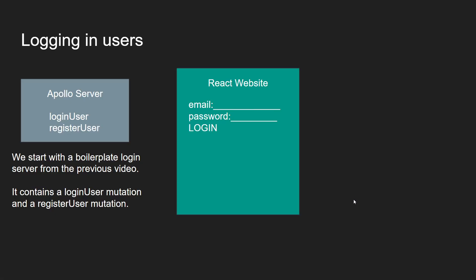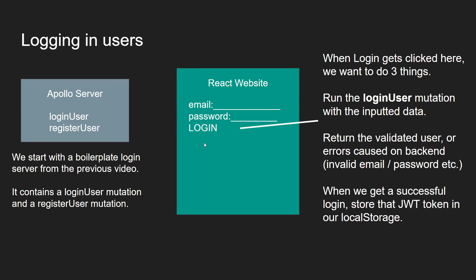Let's also go over how to log in users. We'll have a very similar React website, except this time with a login button. When login gets pressed, we run the login user mutation with the inputted data — login user runs with email and password. It returns the validated user or errors from the backend, such as invalid email or password. When we get a successful login, it gives us a JSON web token that we want to store in local storage.